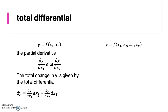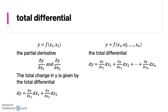The more general case of a function of n independent variables can be expressed in general form as follows. The total differential is shown here, where we take the partial derivative of the function with respect to each of the independent variables — x1, x2, until xn. So the total differential is the sum of each of the partial derivatives with respect to each independent variable.